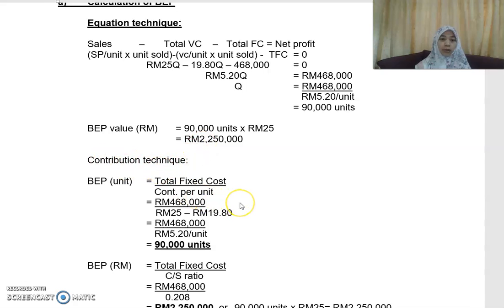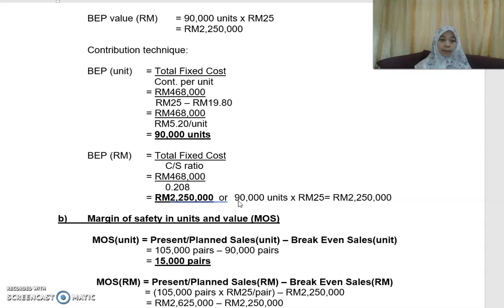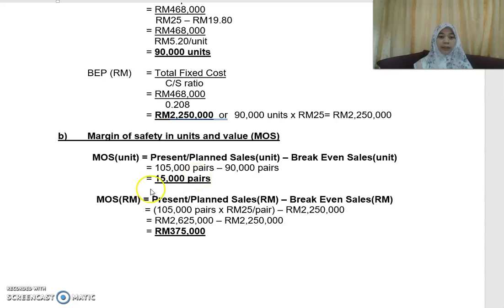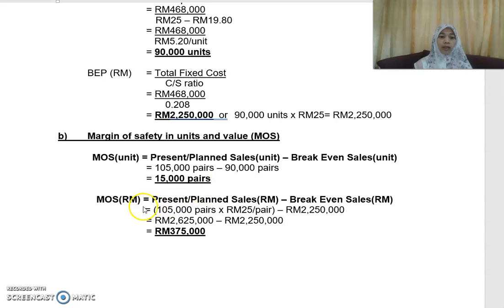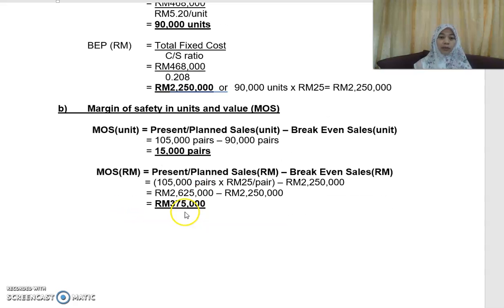Part (b) requires calculating the margin of safety. Margin of safety in units equals present sales minus break-even sales. Currently operating at 105,000 pairs, minus break-even sales of 90,000 pairs, gives a margin of safety of 15,000 pairs of shoes. To express in value: 105,000 pairs times selling price of RM25.